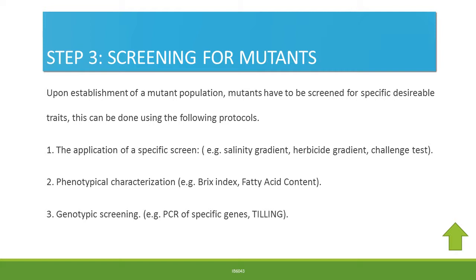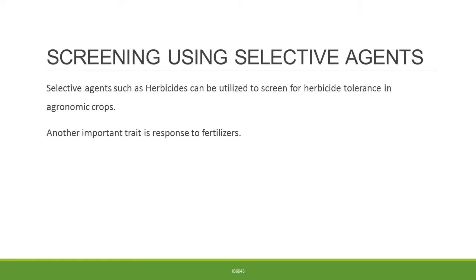Genotypic screening involves PCR of specific genes followed by cleavage or targeted sequencing of specific genes associated with specific traits. Screening using selective agents is one of the most important screens used for herbicide screening. Another important aspect is response to fertilizers, as not all mutants may respond to nitrogenous fertilizers.